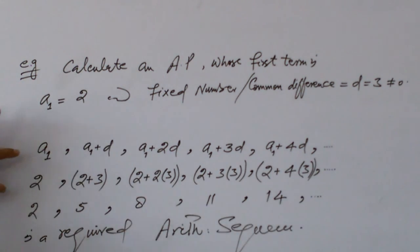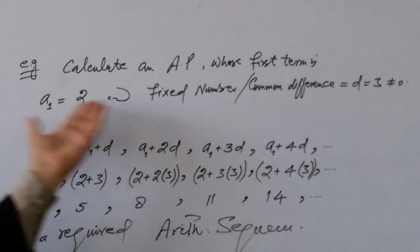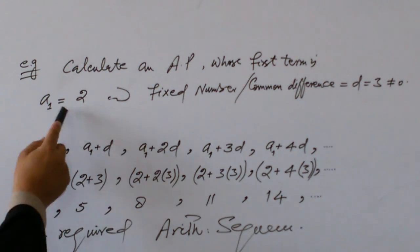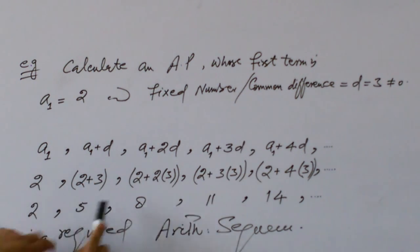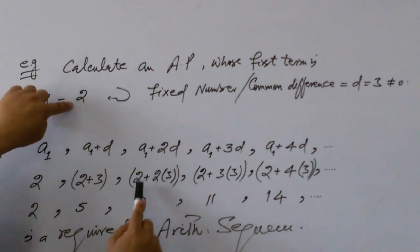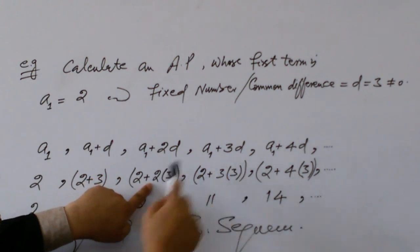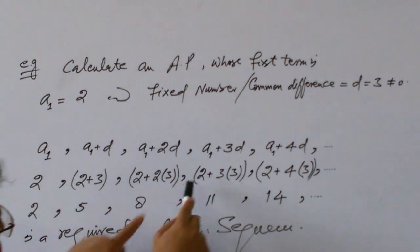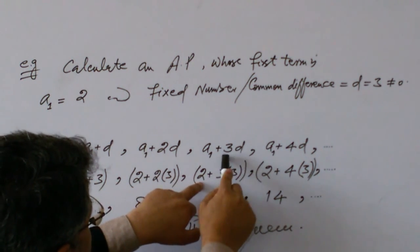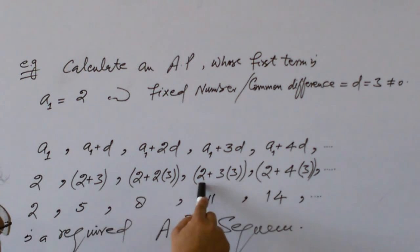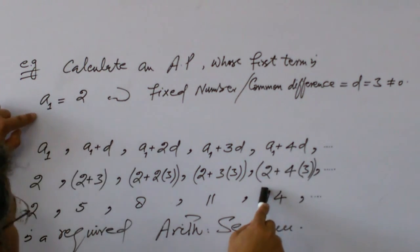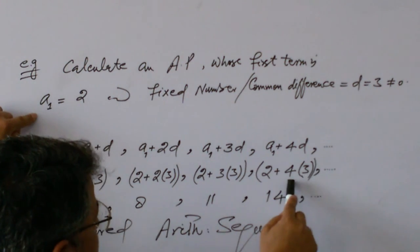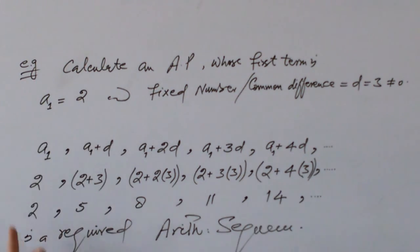Substituting the values A1 equals 2 and D equals 3: the first term is 2, A1 plus D equals 5, A1 plus 2D equals 8, A1 plus 3D equals 11, and A1 plus 4D equals 14, and so on. This is the required sequence defined by A1 and D.